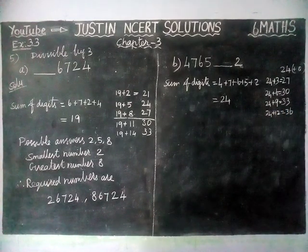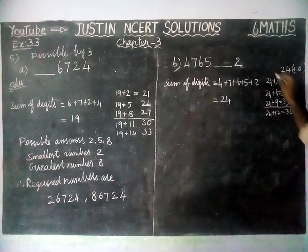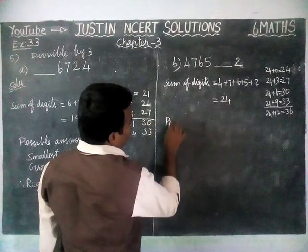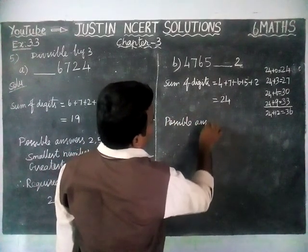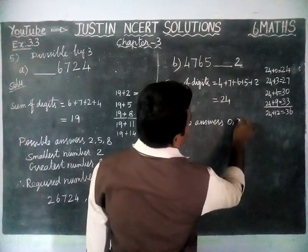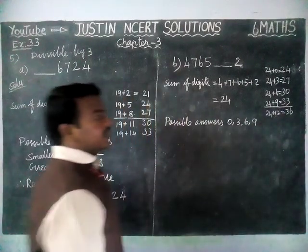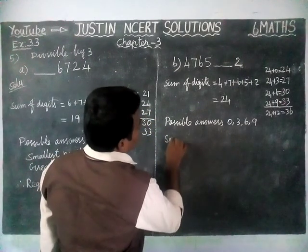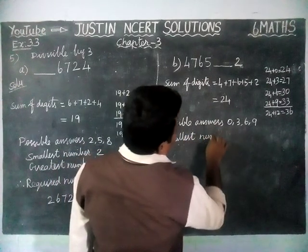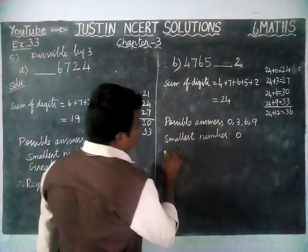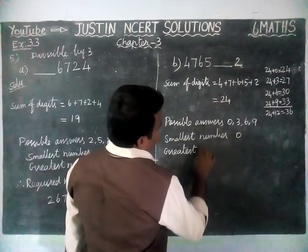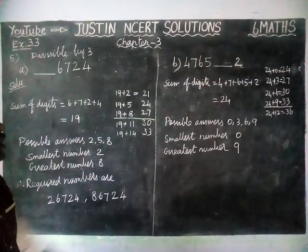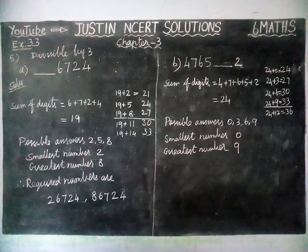So the possible answers are 0, 3, 6, 9. We cannot take 12 because that is a 2-digit number — we can take only single-digit numbers. So the smallest number is 0 and the greatest number is 9. Out of these possible answers, 0 is the smallest number and 9 is the greatest number.